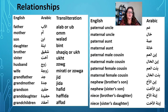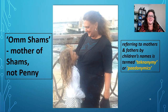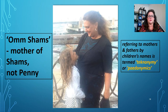Here are some words for relationships. Father is alab or ob, mother is om, son is walad, daughter is bint, husband is zauj, wife is mirati or zauja, grandfather is jid, grandmother is jidda. It's very important to know whether it's your paternal or maternal uncle or aunt, as there are slight differences between those names. Interestingly, when you have a child, you lose your name and are called the mother or father of that child. So in Egypt, I'm not Penny — I am Oma Shams, the mother of my daughter Shams. Referring to mothers and fathers by children's names is termed technonymy or paedionymics.